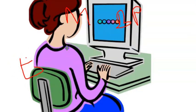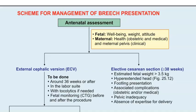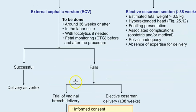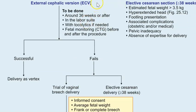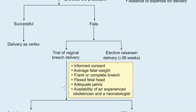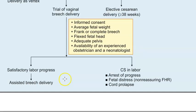To summarize the management scheme: first, assess antenatally — is the fetus fine, is the mother fine, how is the uterus? Then attempt external cephalic version around 36 weeks or after, with tocolytics if needed, and monitor with CTG. If ECV is successful, deliver as a normal vertex presentation. If ECV fails, you can do an elective cesarean or give a trial of breech delivery.